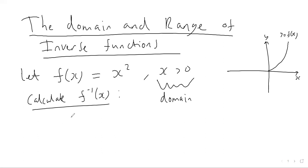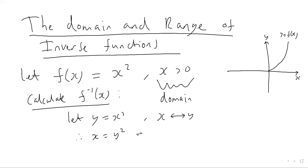This is what we did in the previous video. The key thing is you want to let y equal x squared, and then do a change of coordinates — because inverse functions are basically where you flip the x-axis with the y-axis. If you do that, you get x equals y squared, and then square root both sides to get y equals the square root of x. It's going to be the positive square root, because if we reflect this graph in the line y equals x — remember, that's what you do to get an inverse function.